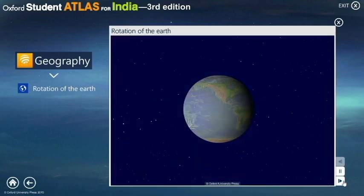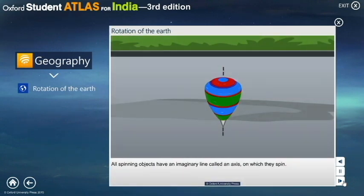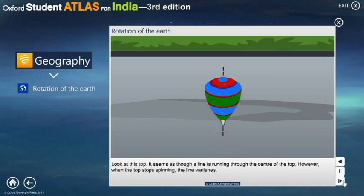Rotation of the Earth. All spinning objects have an imaginary line called an axis on which they spin. Look at this top. It seems as though there is a line running through the center of the top.